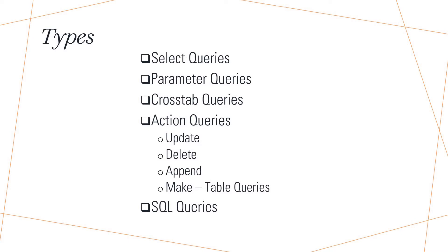Select query is one of the most common types of query. Via this type of query, we can retrieve or fetch data from one or more tables and display the result in datasheet mode. Via select query, we can also specify the columns we want to display in the query result, group records, and calculate sums, counts, averages, minimum or maximum, etc.